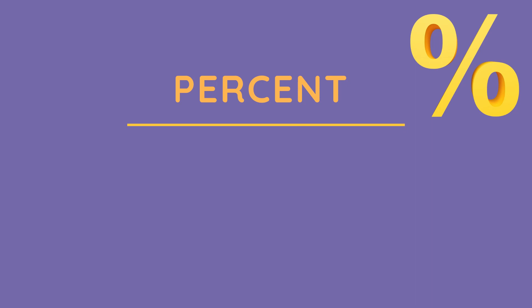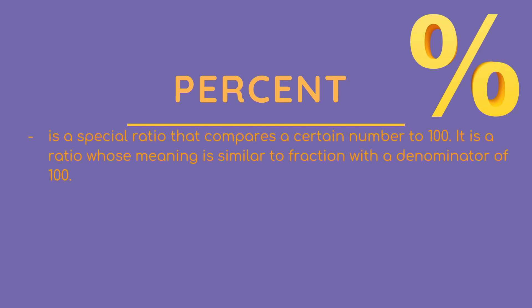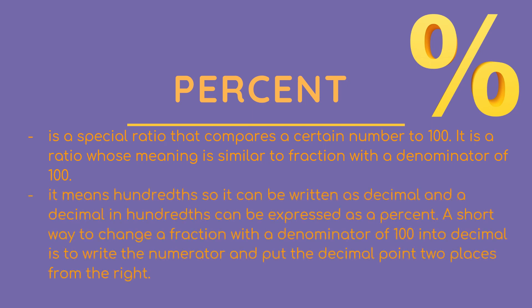From the given problem, what is percent? We can say that percent is a special ratio that compares a certain number to 100. It is a ratio whose meaning is similar to a fraction with a denominator of 100 — so automatically, percent is over 100. It means hundredths, so it can be written as a decimal, and a decimal in hundredths can be expressed as a percent.